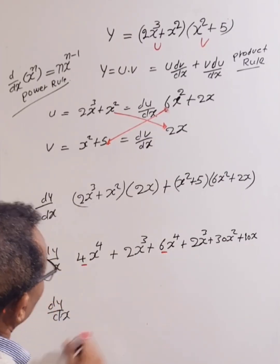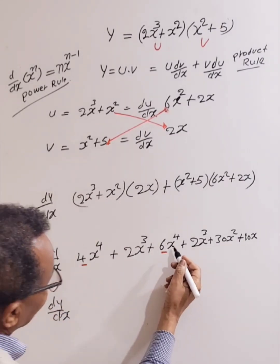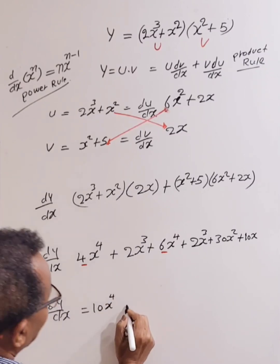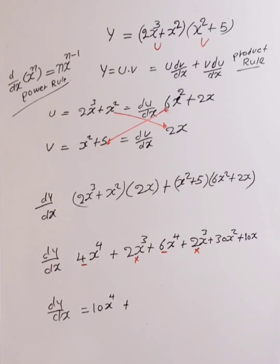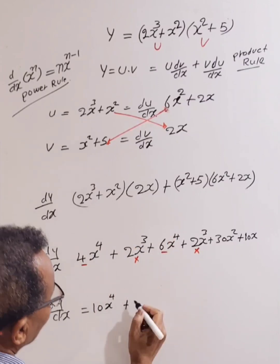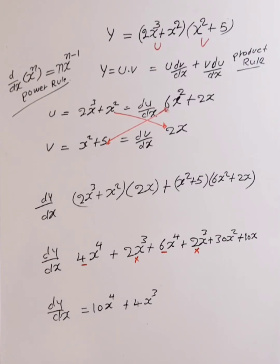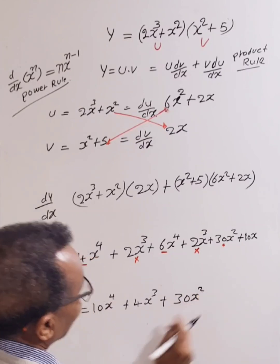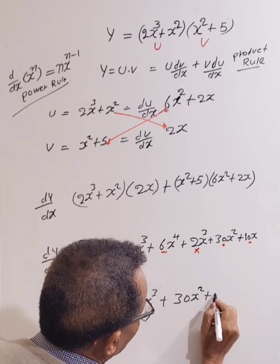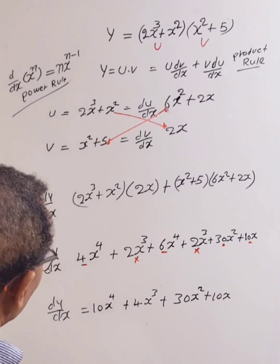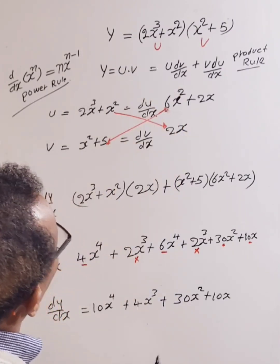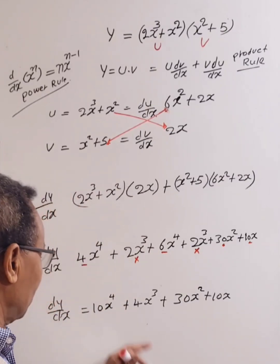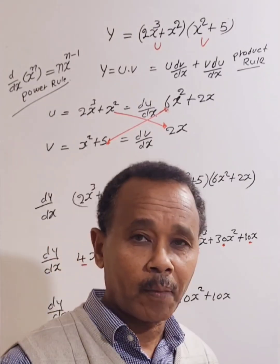Collecting like terms: 4x to the power 4 plus 6x to the power 4 gives 10x to the power 4. Then 2x cubed plus 2x cubed gives 4x cubed. Plus 30x squared. Plus 10x. So for y equals x to the power 3 plus x squared, times x squared plus 5, dy over dx equals 10x to the power 4 plus 4x cubed plus 30x squared plus 10x. Thank you.